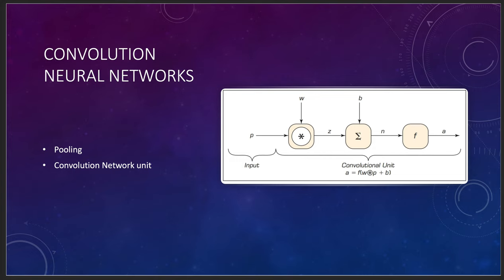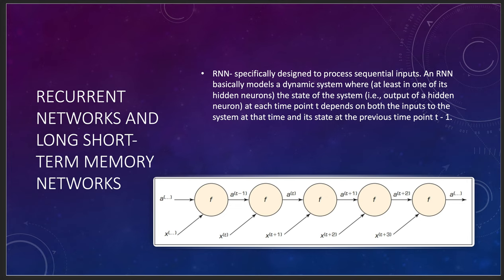Then recurrent networks, long and short-term memory networks. These are specifically designed to process sequential inputs. You'll sometimes get those, especially in a log file with a time stamp. An RNN basically models a dynamic system where at least one of the hidden neurons has state in the system at each point in time that depends on both the inputs to the system at that time and its state at the previous time point. It's basically time dependent, a sequential input. Great for log files, great for batch data, great for anything that has a time stamp or sequential order. Not really good for peptide research but really good for security information management.